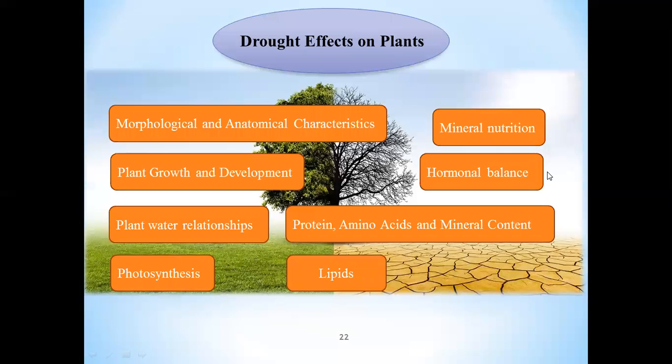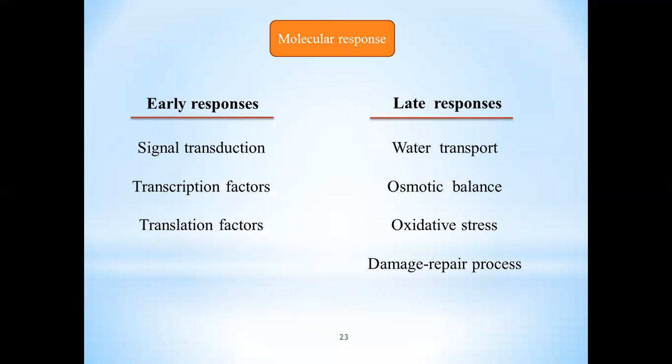And the last effect of drought on plants is molecular response. Many gene expression patterns change when plants are exposed to drought stress. First, the expression of genes involved in early response, such as signal transduction, transcription factors, and translation factors. And next, changes in the expression of genes involved in late response, such as water transport, osmotic balance, oxidative stress, and damage repair process.